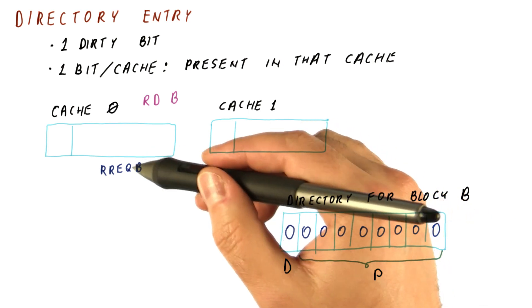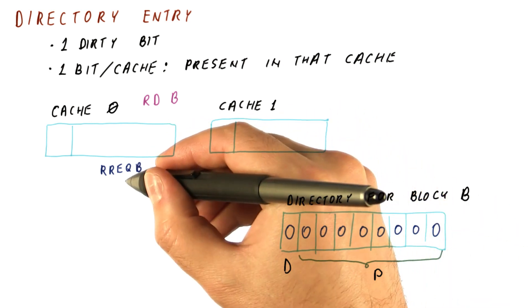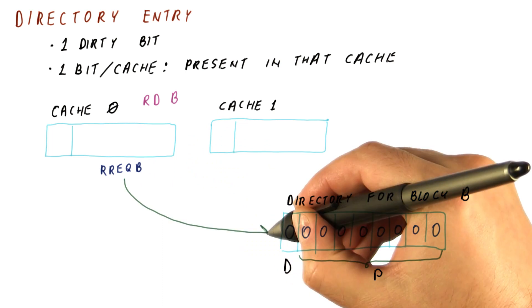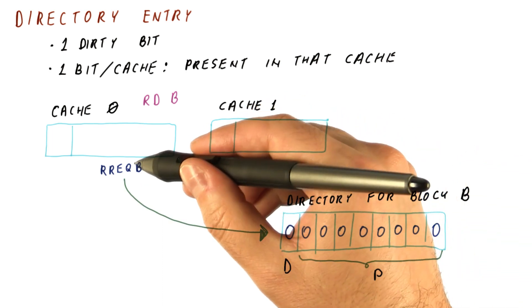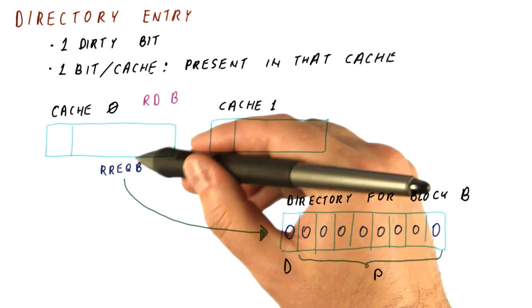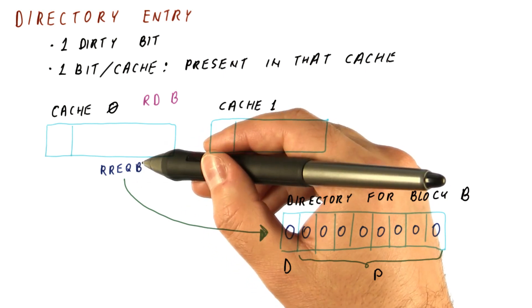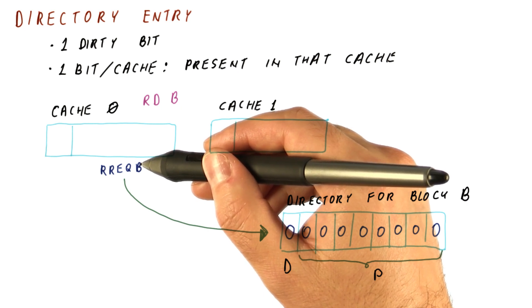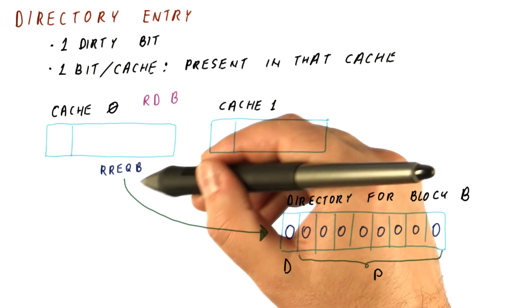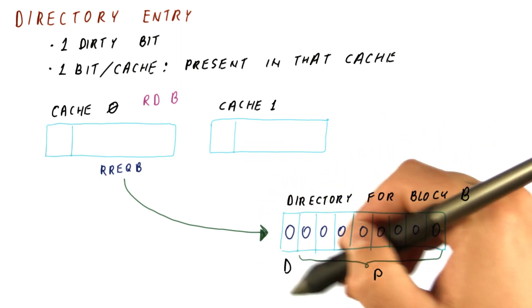But now we don't have snooping anymore. So all requests for a block would be sent first to the home slice of the block. And we determine what is the home slice by looking at the address of the block. Different blocks are distributed among different slices so that we get an even load between the slices. So let's say we determine that for block B, this is the slice where we go.